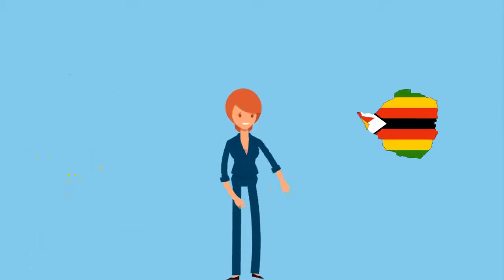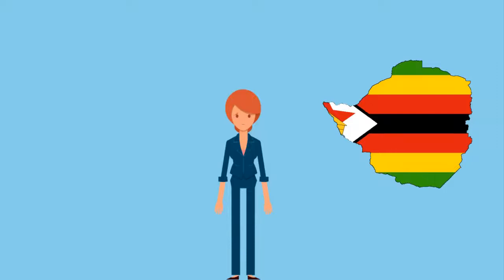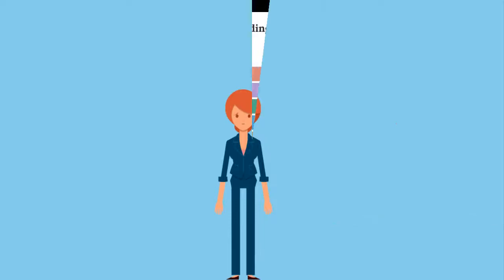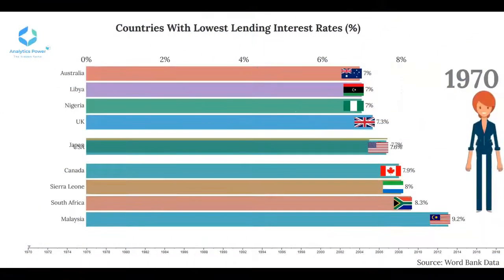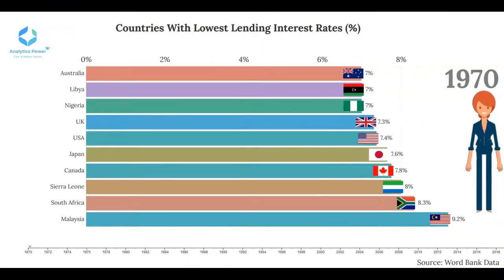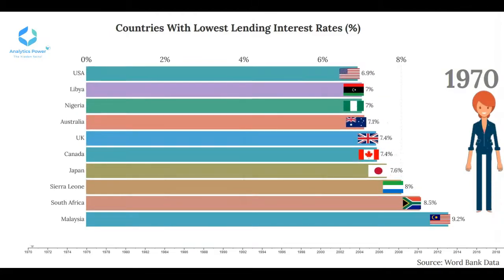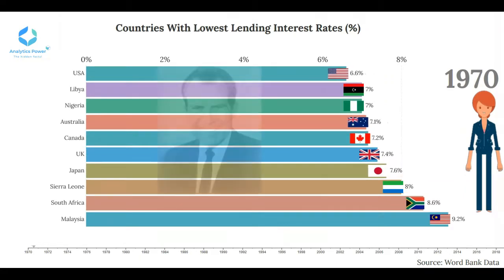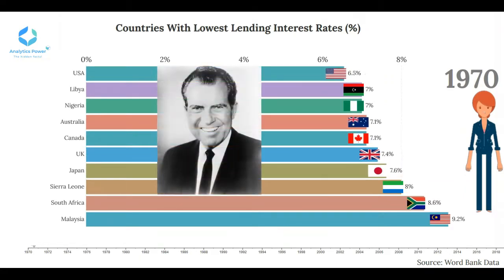In Zimbabwe, during an attempt to tackle spiraling hyperinflation in 2007, the central bank of Zimbabwe increased interest rates for borrowing to 800%. Upon his inauguration in 1969, Nixon inherited a recession from Lyndon Johnson, who had simultaneously spent generously on the Great Society and the Vietnam War.